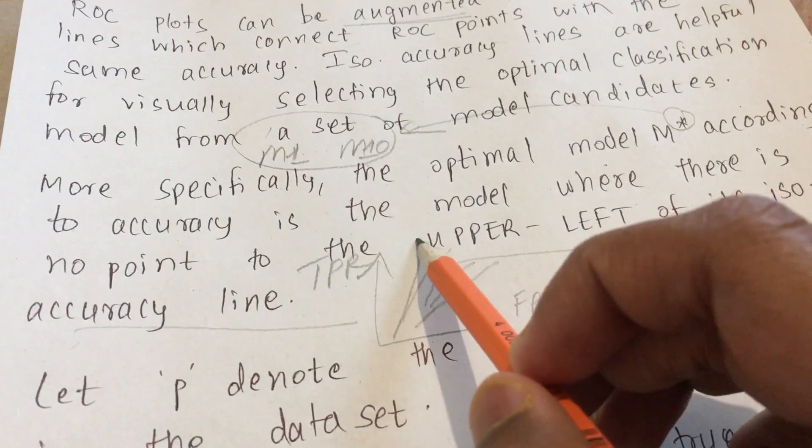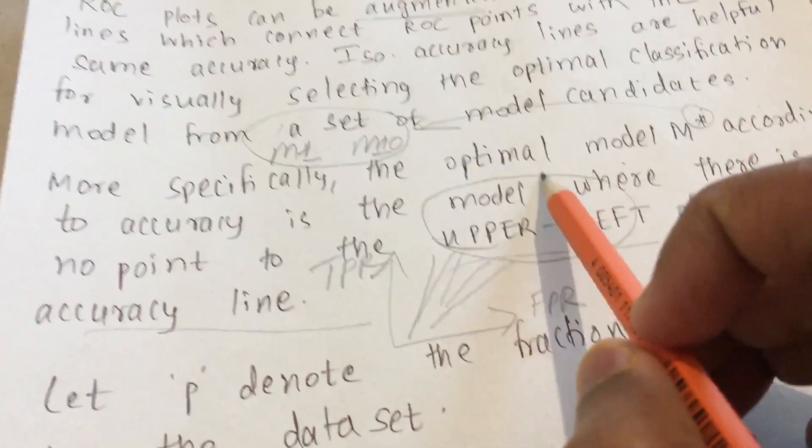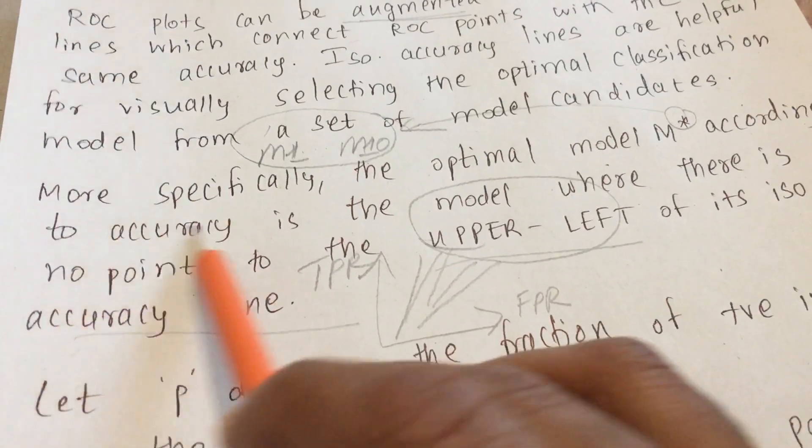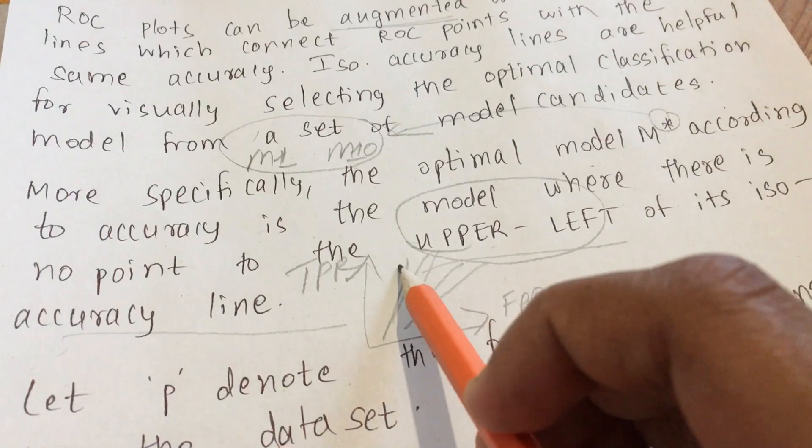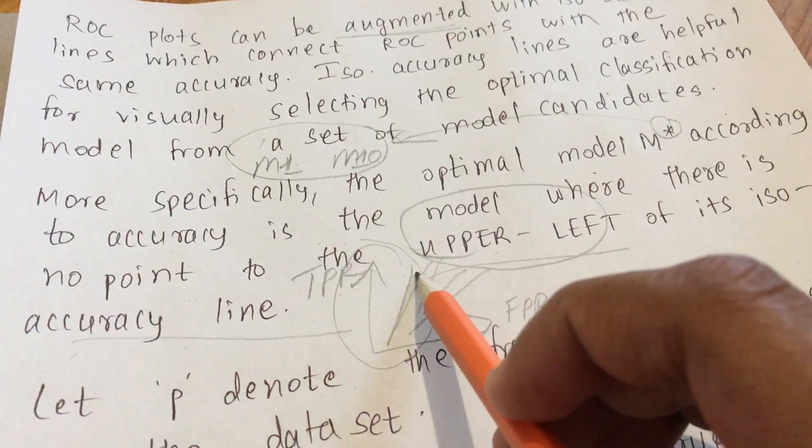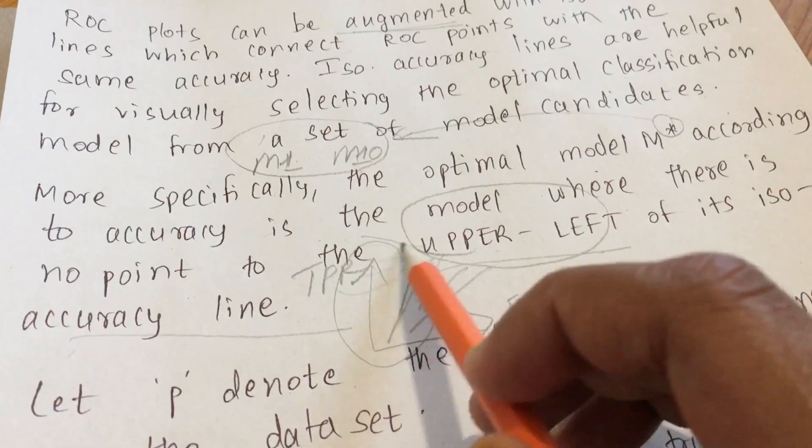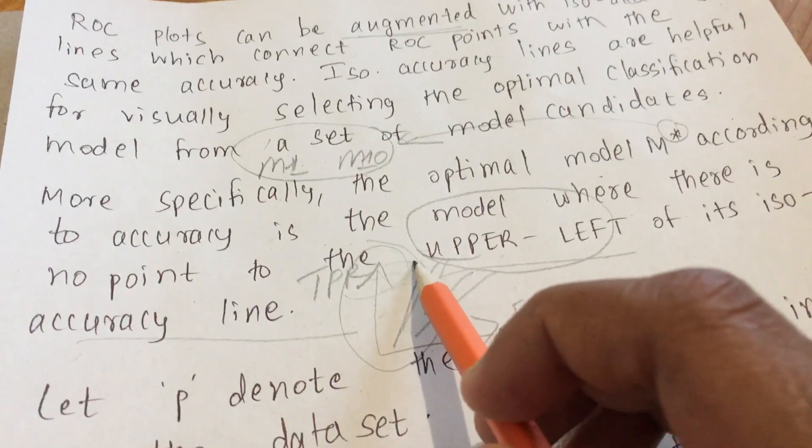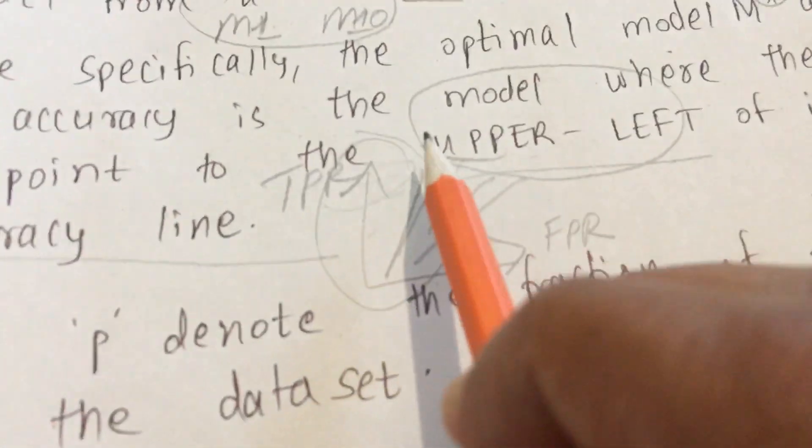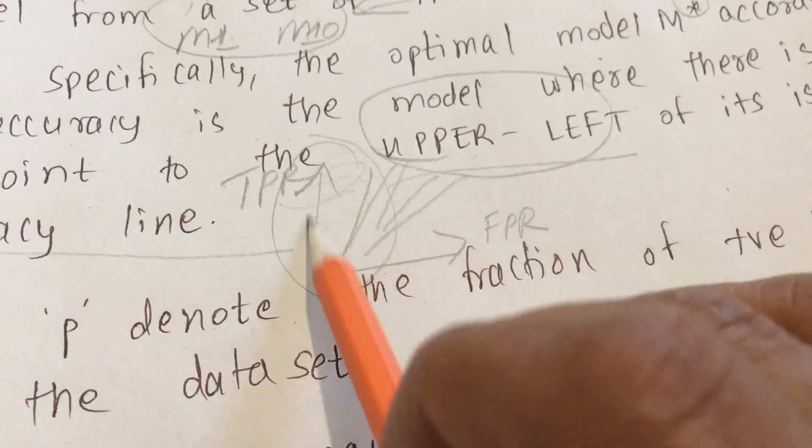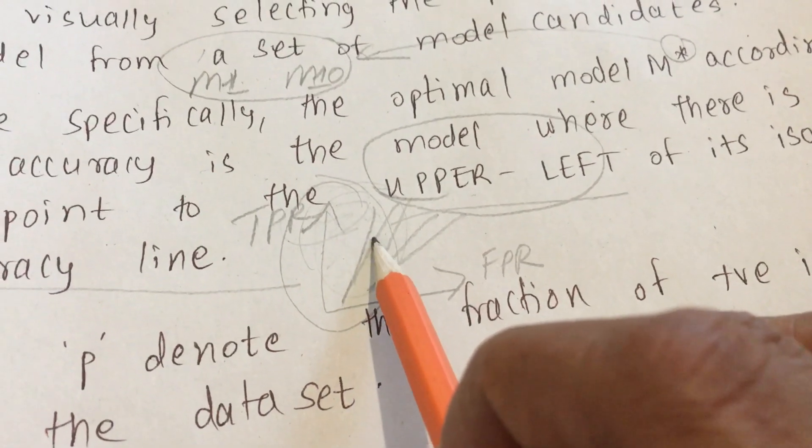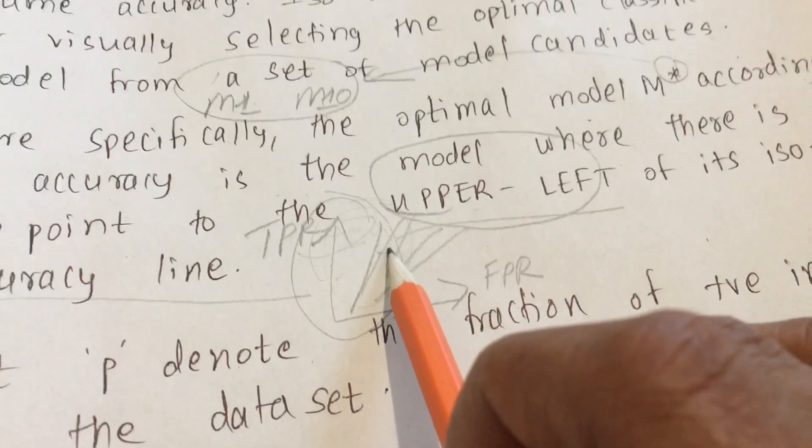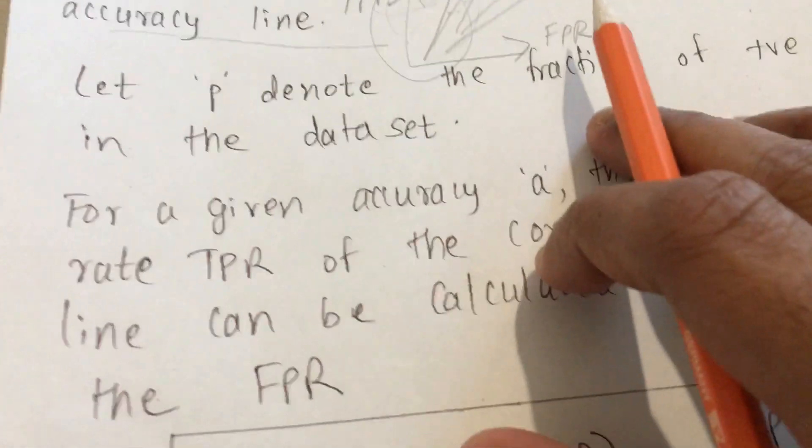This essentially says that the model it selects according to the accuracy is the model where there is no point to the upper left. Upper left is this portion, so here there should be no curve or no lines. The line which comes at the very first in this portion would be the most accurate one or that model has the highest accuracy. So let's move on to the problem.